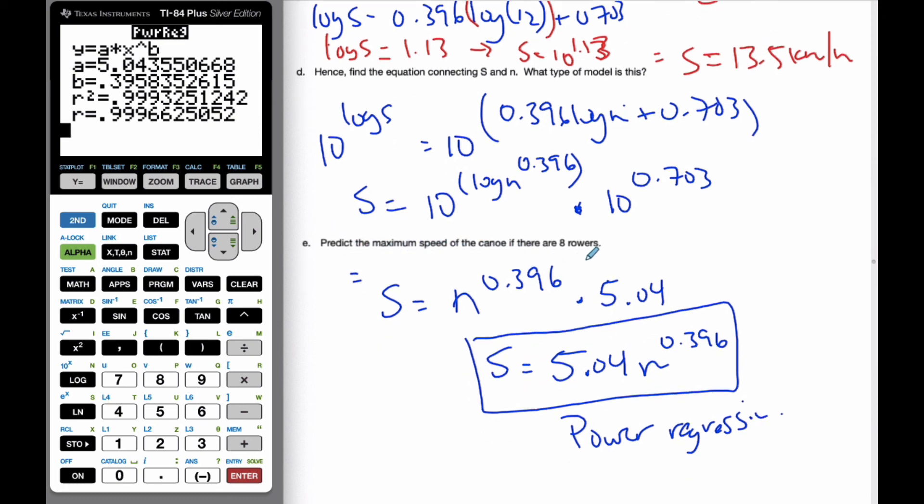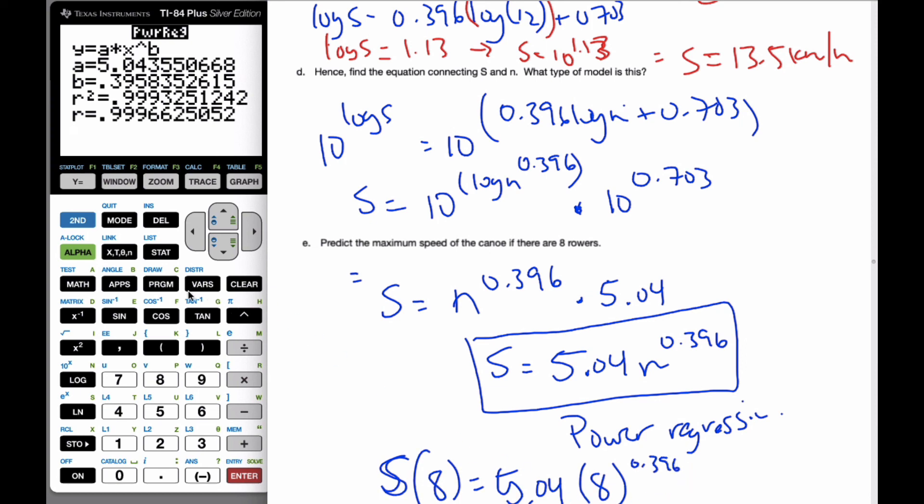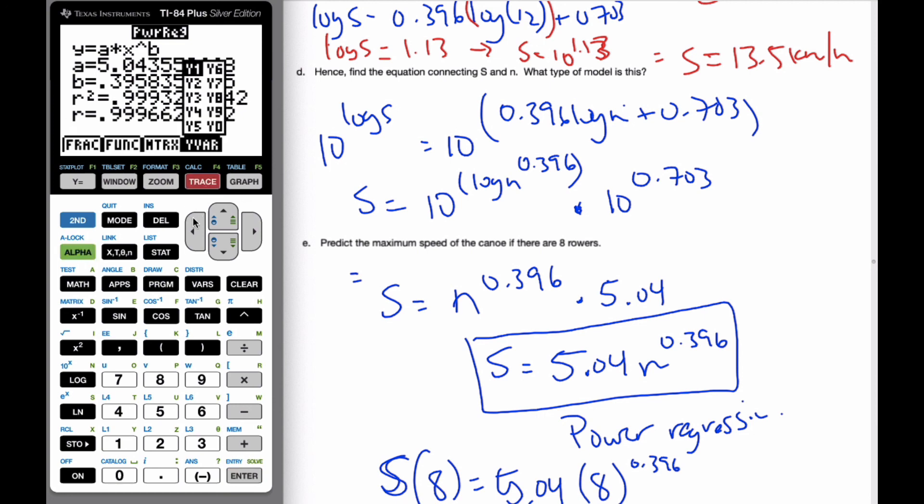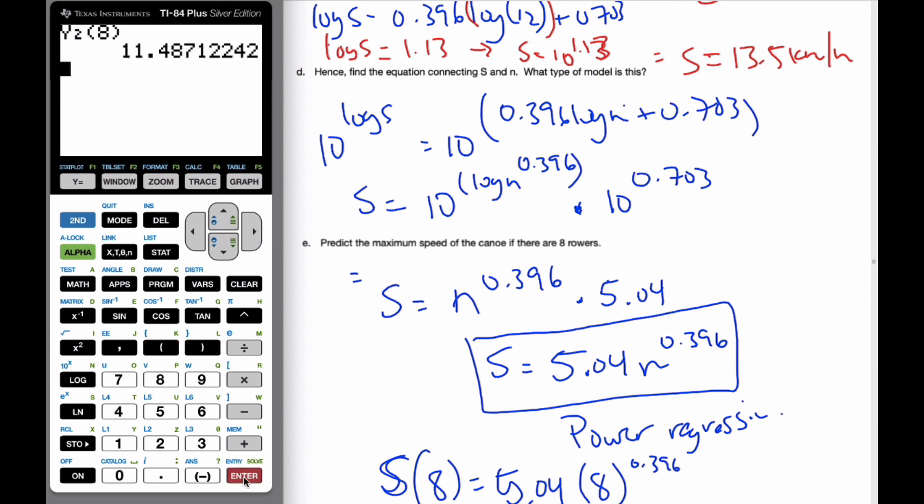And then, finally, if I want to predict the maximum speed of canoe can go if there's eight rowers, well, this is S is going to, at N, I'm going to get 5.04 times 8 to the 0.396. I'm going to do that calculation. If I go second enter, I can go back to here. Let's put it into Y2. And so, now, if I go to my Y2 value and put in eight, it will keep all the decimals for me. And I can predict that it is 11.5 kilometers per hour.